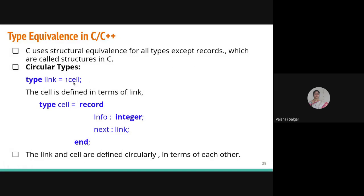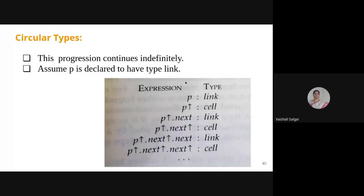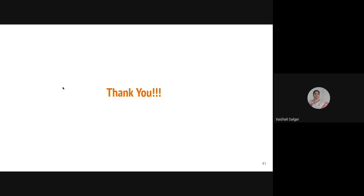Type expression equivalence: two type expressions are equivalent if formed by applying the same constructor to equivalent expressions. In Pascal, c1 and c2 may match by structural equivalence; c3 and c4 may differ because one is a sub-range of another. For circular types using pointers — for example, 'p : link' where link has a cell with a 'next' pointer of type link — the progression continues indefinitely, creating a circular type structure.